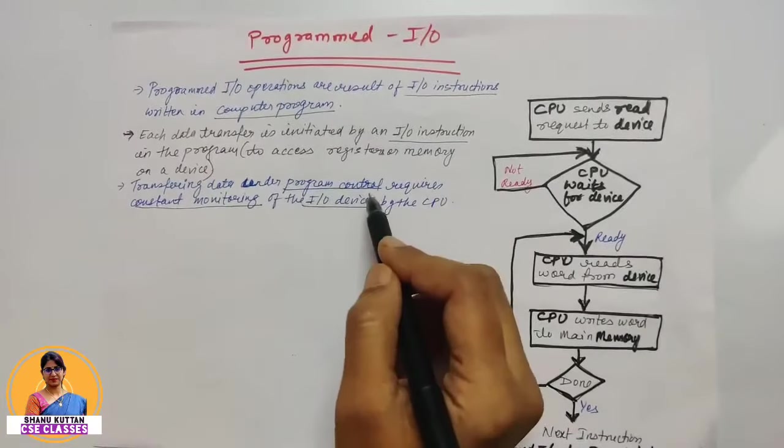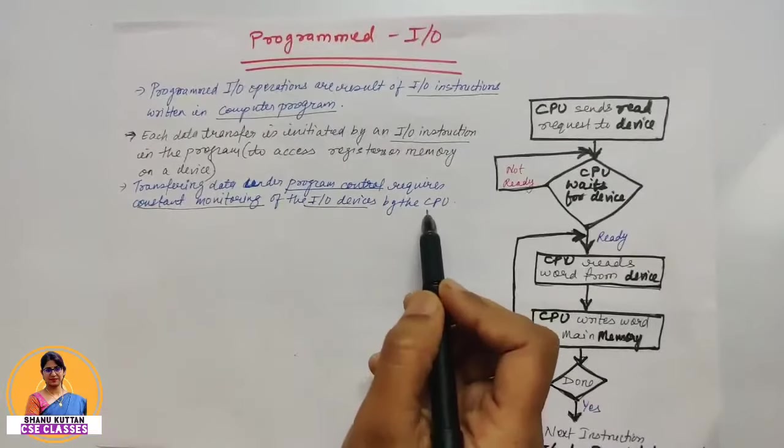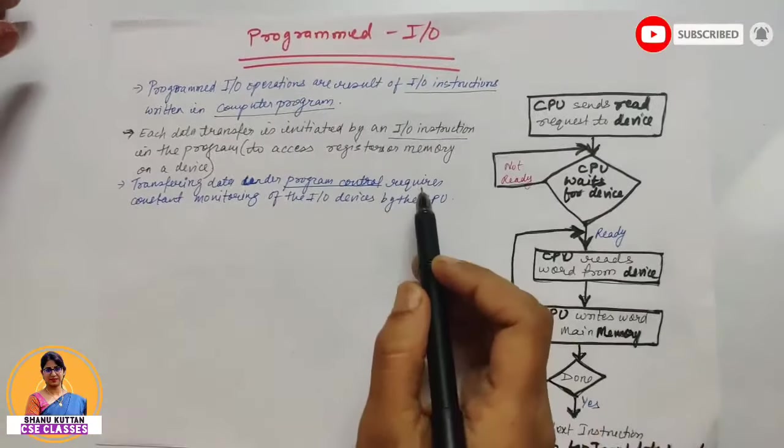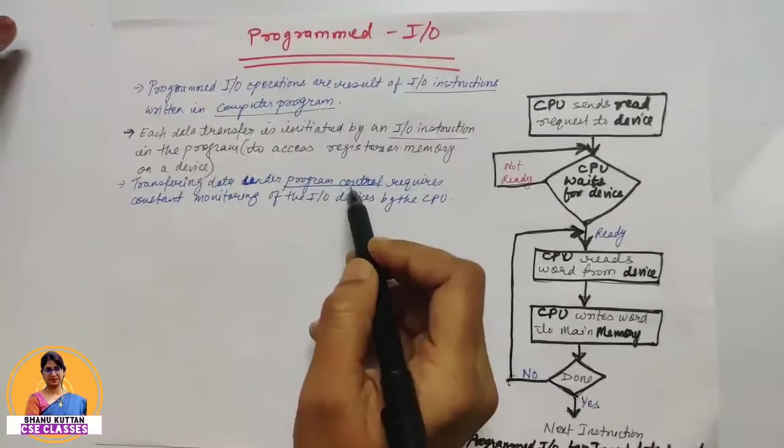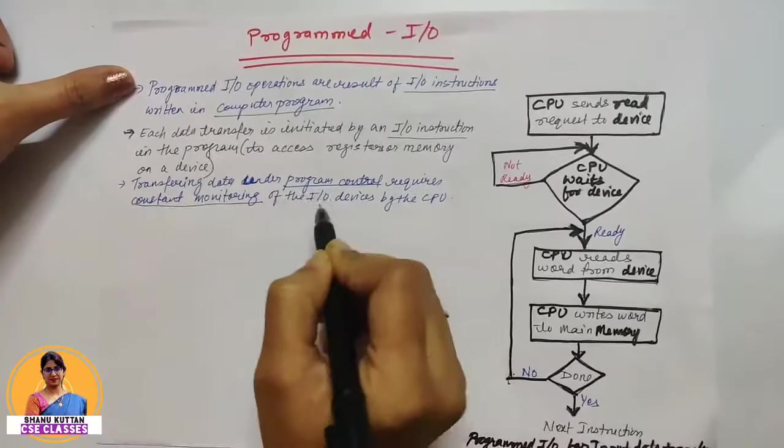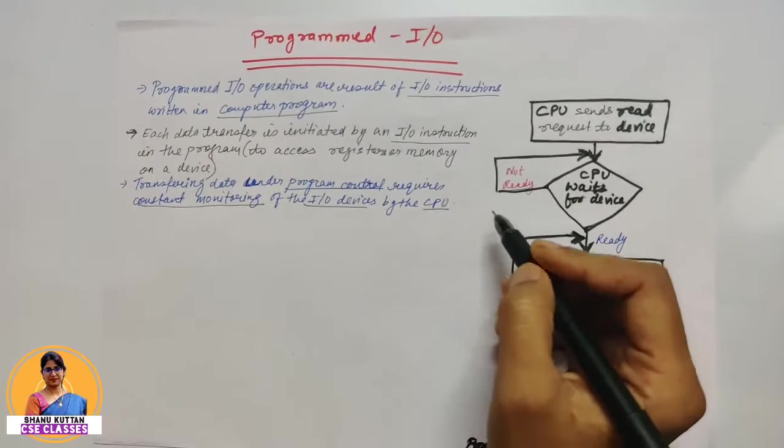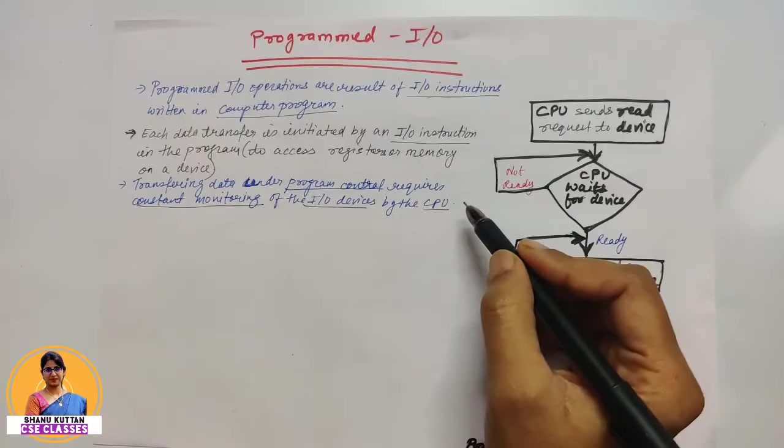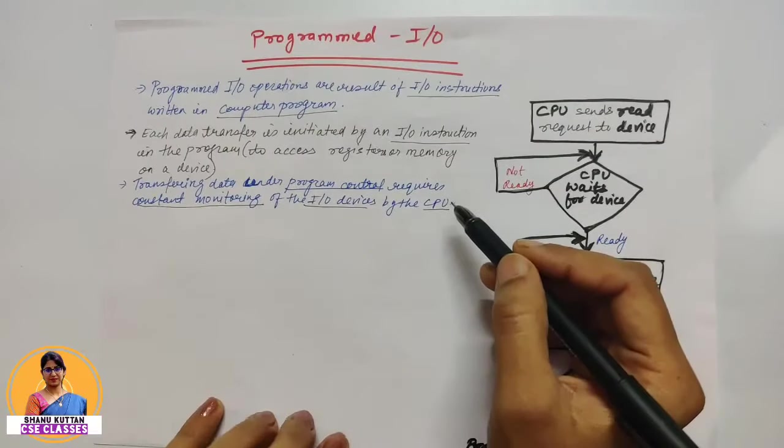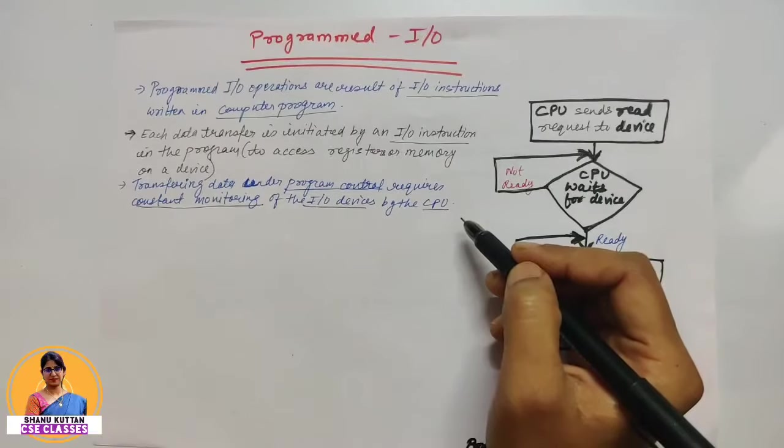Transferring data under program control requires constant monitoring of I/O devices by the CPU. Ab hoota kya hai programmed I/O mein, jab hum data transfer karate hai program control ke andar, isme we require constant monitoring of the I/O devices by the CPU. Jab bhi CPU data transfer karne ke liye request karata I/O devices se, to programmed I/O mein CPU ko continuously I/O devices ko monitor karna padata hai, ki jab I/O devices ready hongi tab woh data transfer karega.